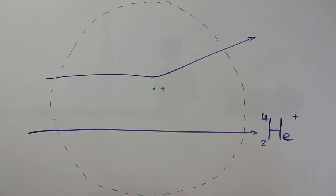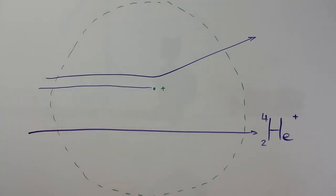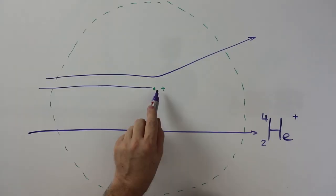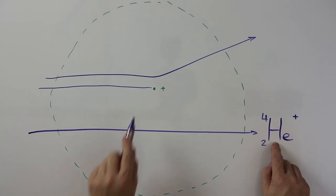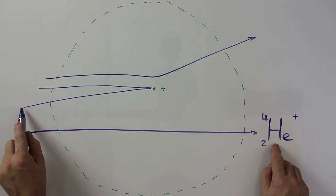And very occasionally what happened was that they came in almost directly at the nucleus. And this positive charge of the nucleus and the positive charge of the alpha particle repelled the item. And the alpha particle was sent back almost on the path it came in on.